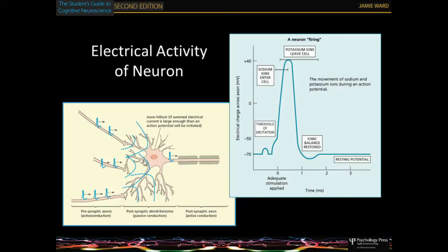Neurons have axons that send electrical signals and dendrites that receive signals. This neuron here is receiving input from various axons. Axons generate what are called action potentials — a sudden depolarisation, a sudden change in electrical activity of the neuron from negative to positive. It's to do with the flow of ions across protein receptors in the membrane. Then it takes a while to reset, and then it can fire again. Only axons generate action potentials; dendrites do not.